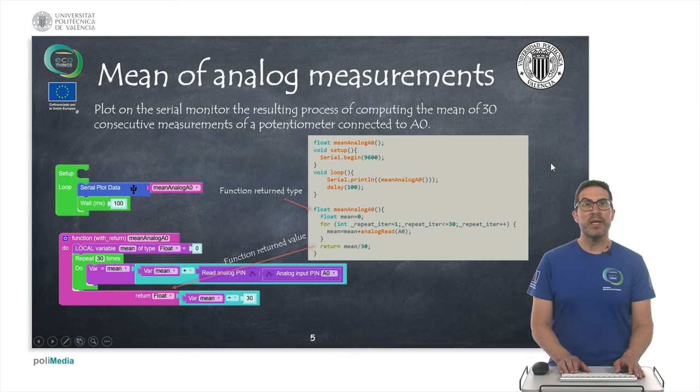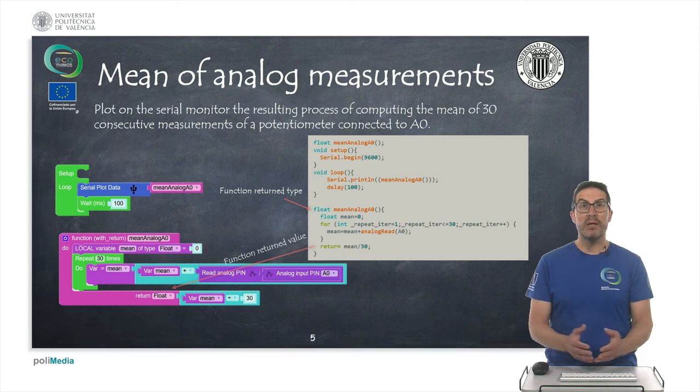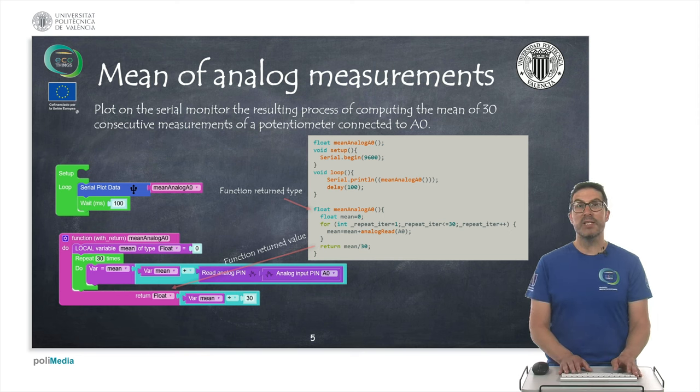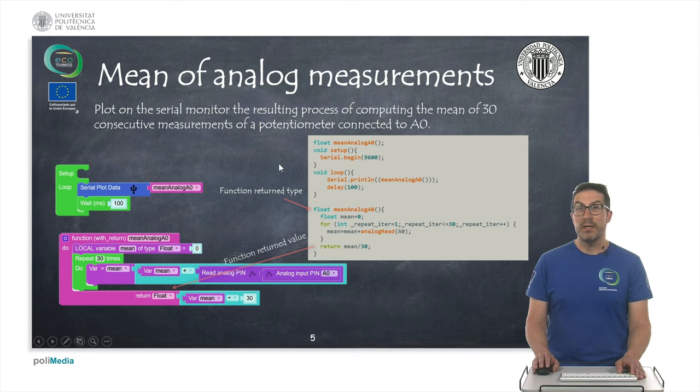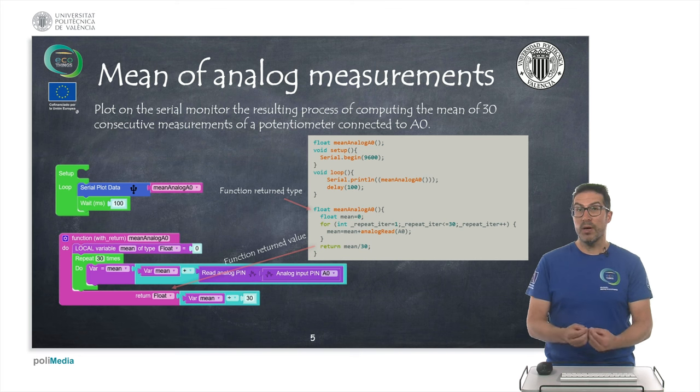In this second example the idea is that we want to compute some kind of mean of whatever signal. In this case we're doing 30 consecutive measurements that we read from the potentiometer that is connected to A0 and as a result of this function call we want to have a return number.